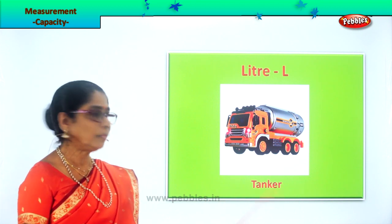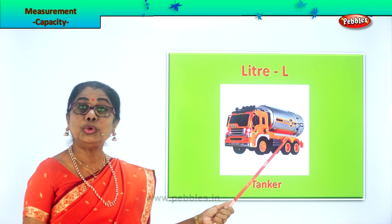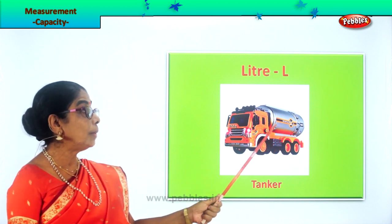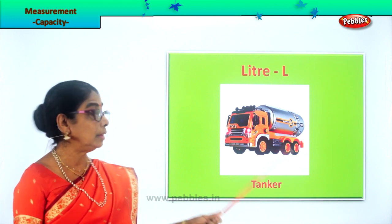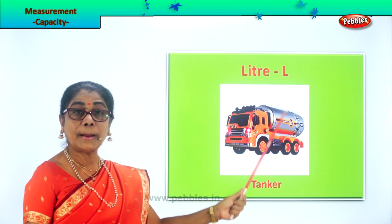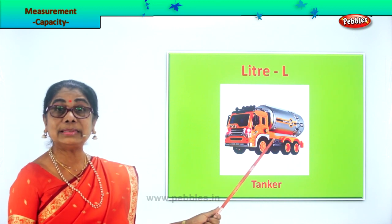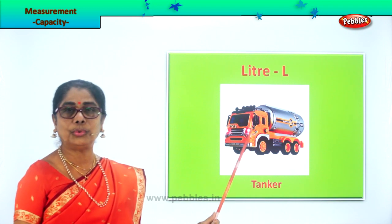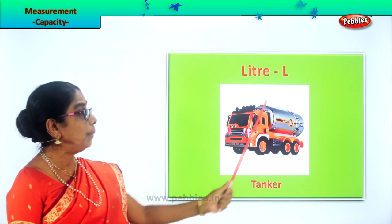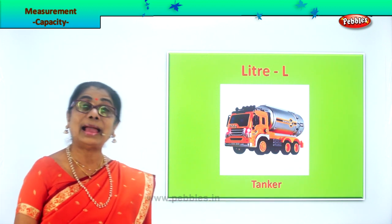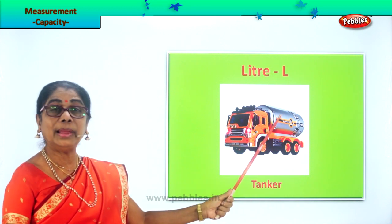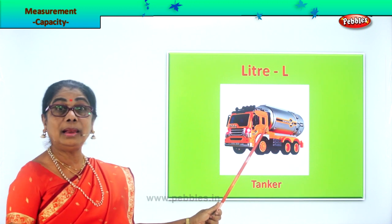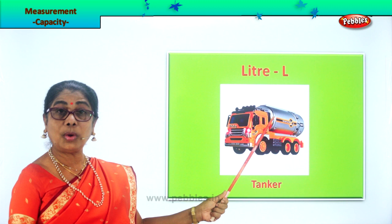Now look at this — this is a tanker. You might have seen on the road: water tankers, oil tankers. There are also milk tankers that carry milk from one place to another. Oil is always carried in huge tankers like this. In summer when there is a scarcity of water, you see a lot of water tankers going on the road. In the lorry, this big huge cylinder-like thing is attached, and they pour milk, water, or oil into it and take it from one place to another. This holds a large capacity — it can be 100, 200 liters and more.